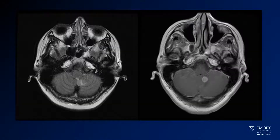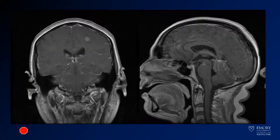Now we have some MR images. This is a FLAIR image on the left and a post-contrast image on the right. Here are a couple more images — these are both post-contrast.